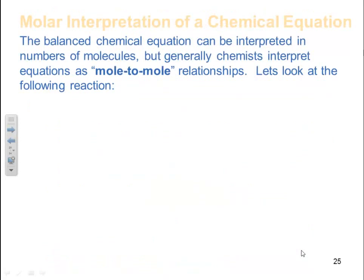The balanced chemical equation can be interpreted in the number of molecules, but generally chemists interpret equations as mole to mole relationships. Let's look at the following reaction: nitrogen gas plus three hydrogen gases gives me two ammonia gases.